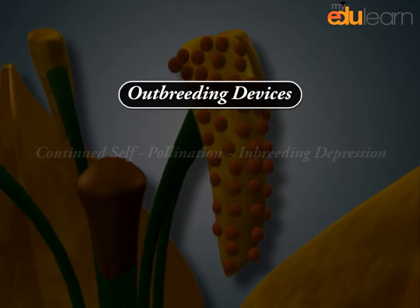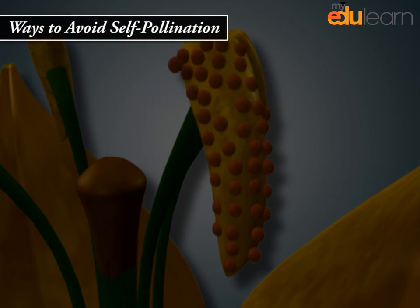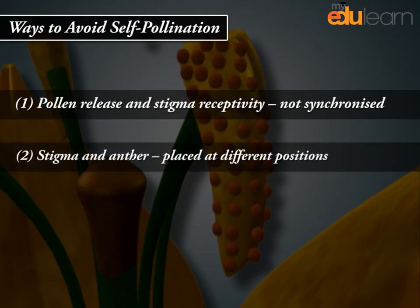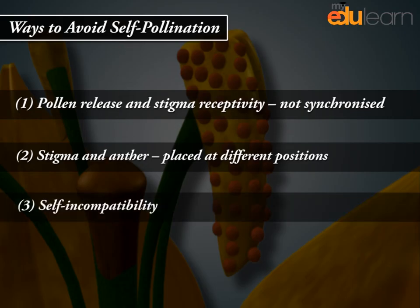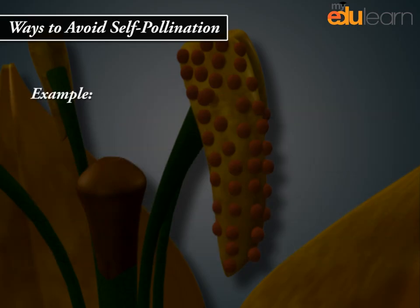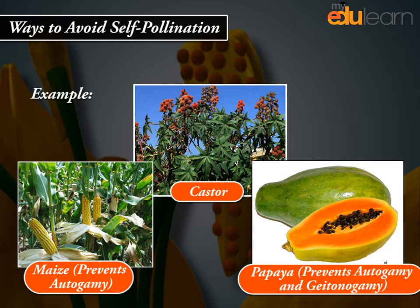Outbreeding devices prevent inbreeding depression caused by continued self-pollination. Ways to avoid self-pollination include: pollen release and stigma receptivity not being synchronized; stigma and anther placed at different positions; self-incompatibility; and production of unisexual flowers. Examples: Castor and Maize prevent autogamy; Papaya also prevents autogamy.